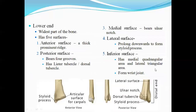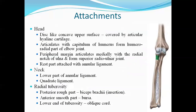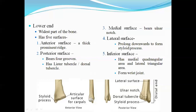The lower end is the widest part of the bone. The anterior surface is crest-like and prominent. On the posterior surface there is a prominent feature called the dorsal tubercle, also known as the Tubercle of Lister.